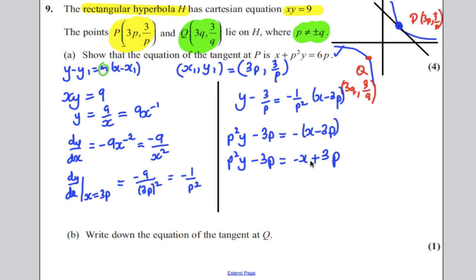And the last thing I'm going to do, I'm going to add x to both sides and add 3p, and I'm going to get, as required, x + p²y is equal to 6p, and that's exactly what I was looking for, for four marks.